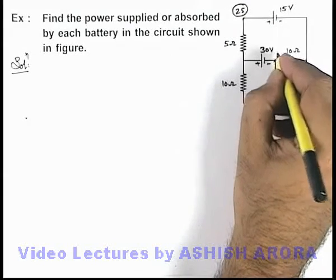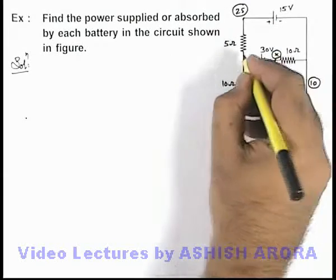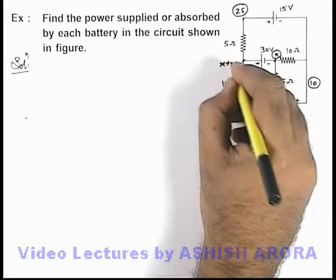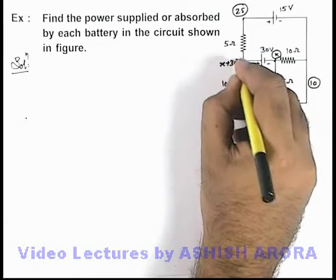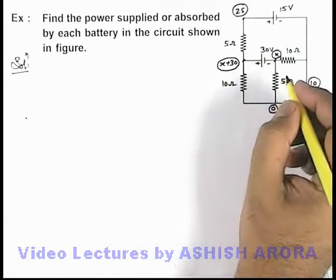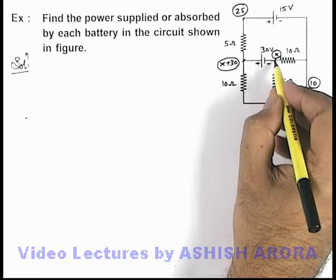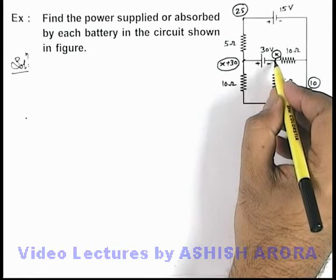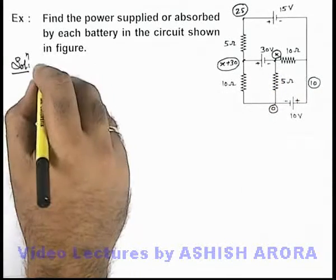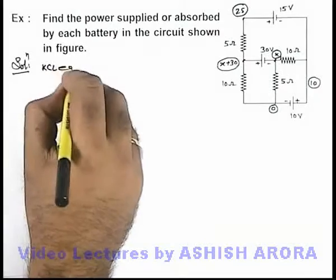At this junction, if we consider the potential to be x, then at this point it will be taken as x plus 30. Now if somehow we are able to calculate the value of x, we can get all these currents. So here we write the KCL equation for the variable x at this junction.